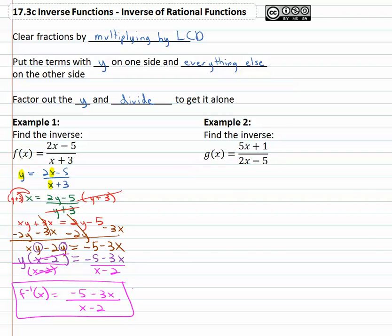Let's take a look at one more example where we find the inverse of a rational function. Here g(x) is (5x + 1)/(2x - 5). Remember the g(x), that's the y part, equals (5x + 1)/(2x - 5). Now we need to change the x's into y's and change the y into an x to find the inverse. x equals (5y + 1)/(2y - 5).